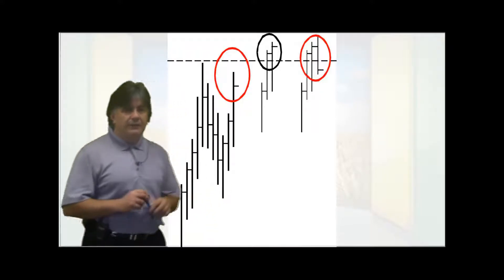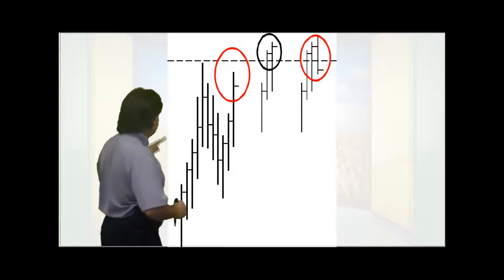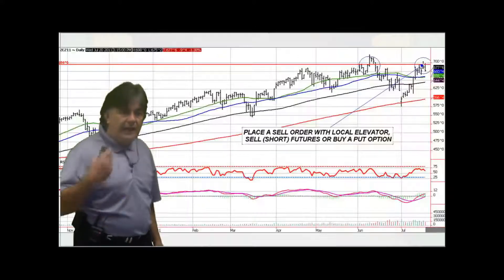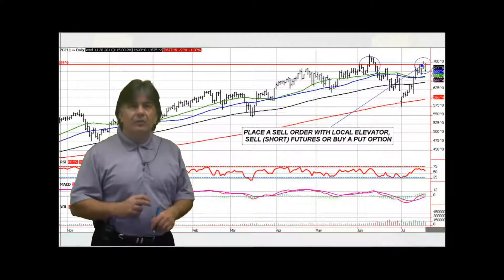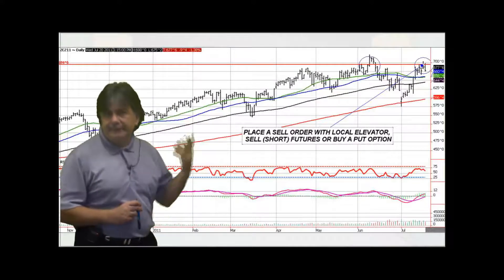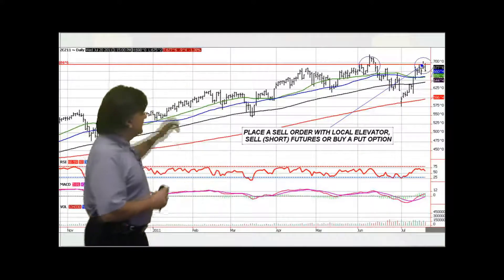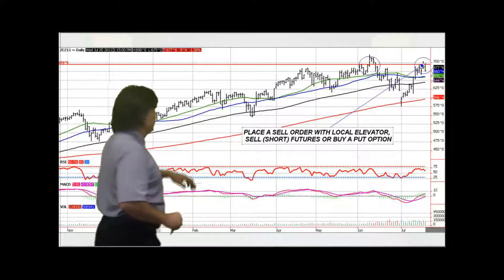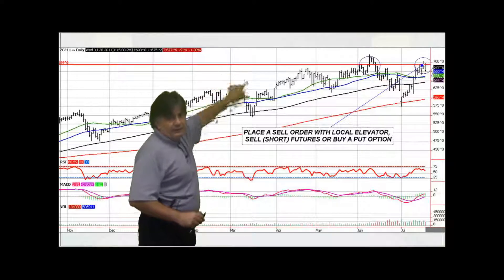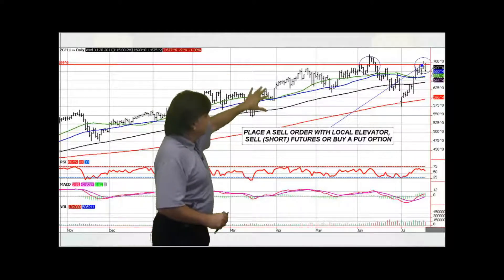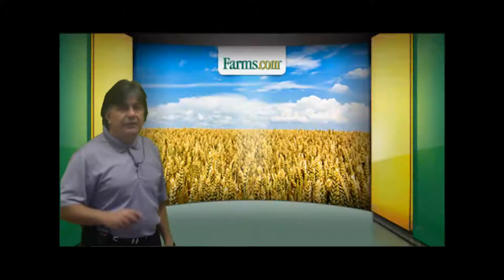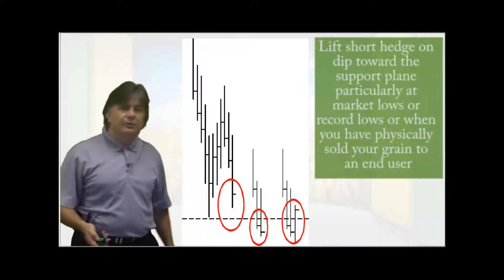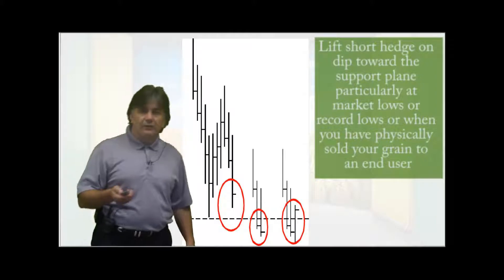So how do you manage this? Let's look at managing a resistance plane. So let's assume the market's trending higher, looking like it's topping out a little bit, getting a little tired. You could actually sell some bushels forward to a local elevator, or you could call your broker and sell futures at that particular price. Let's give you an example here. Here's the 2011 December corn daily futures chart. You can see the markets hit a peak once, come back down a few times, retested that resistance plane. You could put a hanging order in with your local elevator or your broker to sell around that $7 a bushel on corn. And there's nothing wrong with selling corn at $7 a bushel.